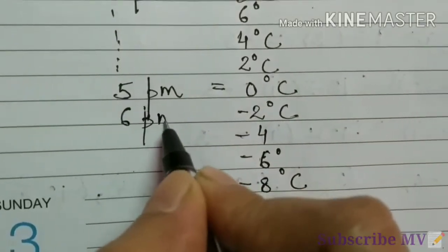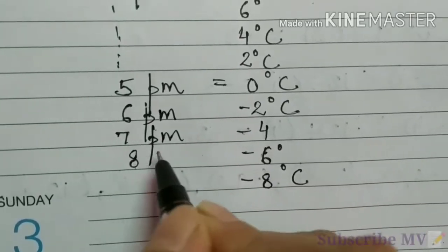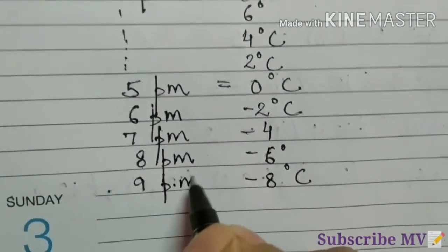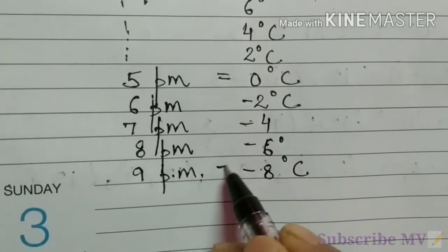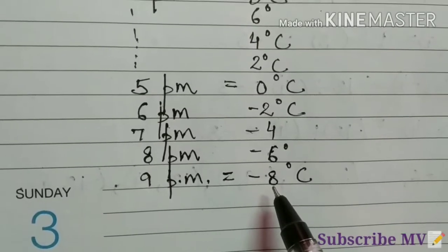So what will be the time? 5 p.m., then 6 p.m., 7 p.m., 8 p.m., 9 p.m. So we can see that at 9 p.m. the temperature is minus 8 degree Celsius.